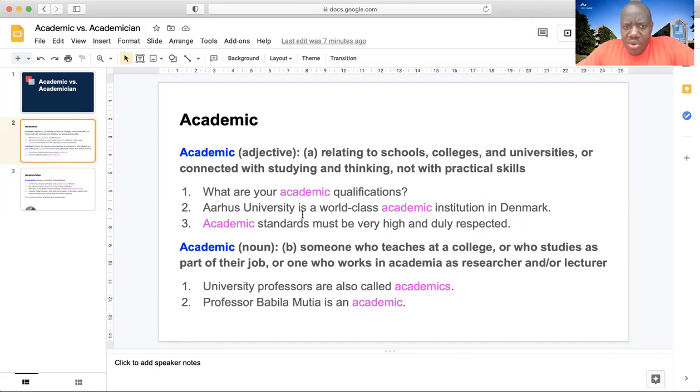Another example, Aarhus University is a world-class academic institution in Denmark. Number three, academic standards must be very high and duly respected.